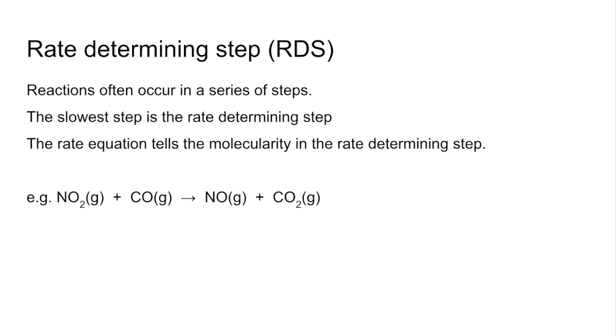For example, the reaction between nitrogen dioxide and carbon monoxide making nitrogen monoxide and carbon dioxide. The rate equation, this has been determined experimentally, maybe by initial rates or something like that, is coming out at rate equals K, concentration of NO2 squared. What that means is the rate determining step involves two molecules of NO2 reacting together.